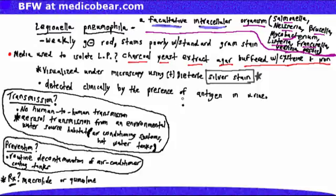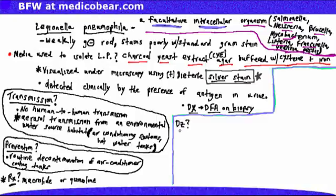A little bit more about the diagnosis. We mentioned that it can be seen under the microscope using a silver stain and also grows on the charcoal yeast extract agar, buffered with cysteine and iron. I do want to make a note that the diagnosis can also be made by doing the direct fluorescence antibody on biopsy. And we did say the silver stain too, and then the charcoal yeast extract, C-Y-E-D-Z for disease.